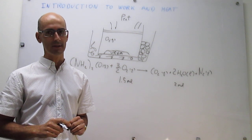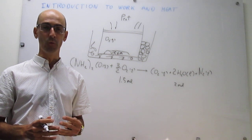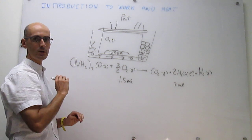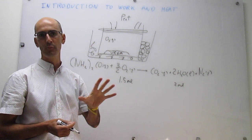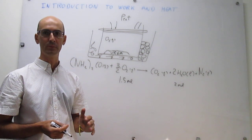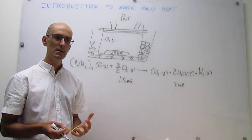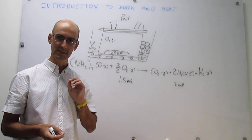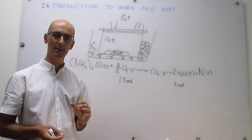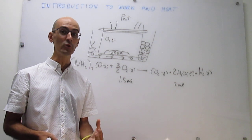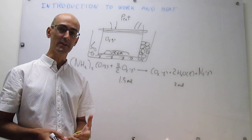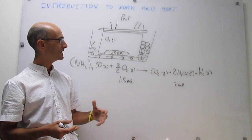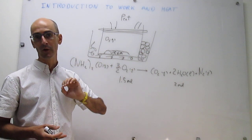Now we change the system to explain an important aspect of work and heat. We lock the piston in place so the gas cannot expand against external pressure — the volume stays constant. By doing this, we have eliminated the possibility of work. We run the same reaction, get the same products, but we're not extracting any energy as work. Instead, all of the energy transfer goes as heat, and you can prove that more of the ice would melt, meaning more energy is transferred as heat.